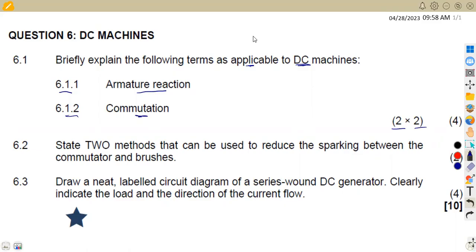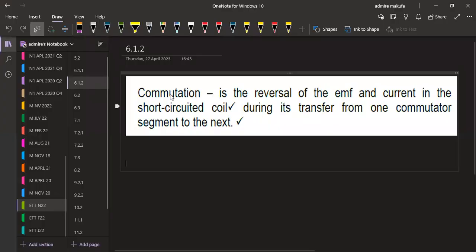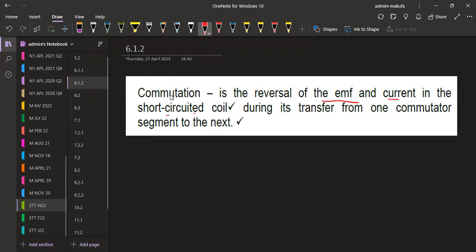We are given this part that commutation is the reversal of the EMF and current in the short-circuited coil during its transfer from one commutator segment to the next. So that is what we refer to as the commutation, which is important on your description or on your definitions in this case.